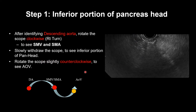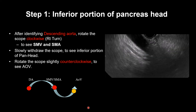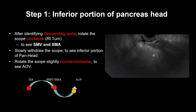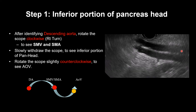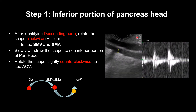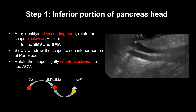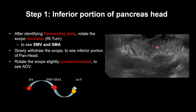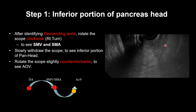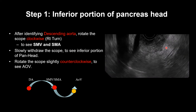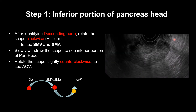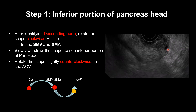Step 1: inferior portion of the pancreatic head. After identifying the descending aorta, rotate the scope clockwise — we can see SMV and SMA. This is the descending aorta. We can see SMV and SMA. This area is the pancreatic head, lower portions. Slowly restore the scope. Rotate the scope slightly counterclockwise — we can see the ampulla of Vater. This duct is the CBD. This duct is the main pancreatic duct.